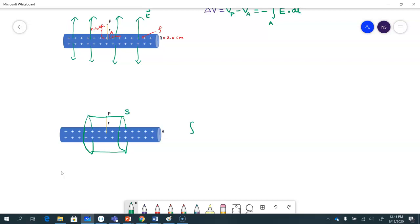So I'll say, integral E dot dA is q_in by epsilon naught through the surface and the flux is all through the curved surface area. So it's E times 2πrL, where L is the length of this cylinder. And the charge inside is this much charge. So that's going to be rho times the volume, which is πR²L divided by epsilon naught.